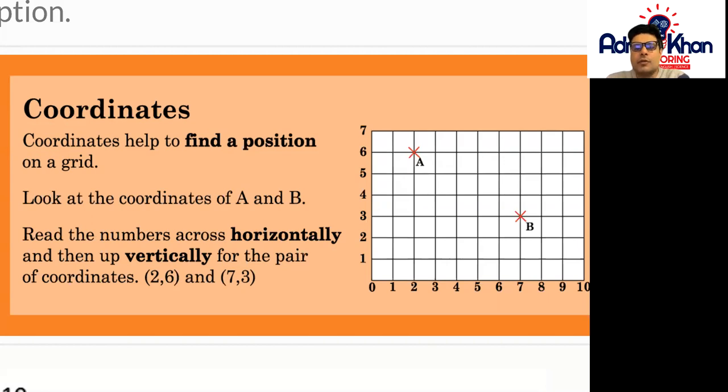So with regards to horizontal lines, horizontal lines are always going from left to right whereas vertical lines are always going from top to bottom. Top to bottom.